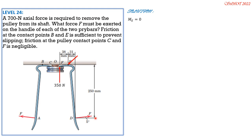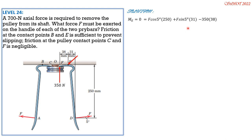F has horizontal and vertical components. Setting moment at E equal to zero, counterclockwise positive: F cos 5° × 250 mm plus F sin 5° × 31 mm minus 350 × 38 mm = 0. Solving: F = 350 × 38 / (250 cos 5° + 31 sin 5°) = 52.83 N.